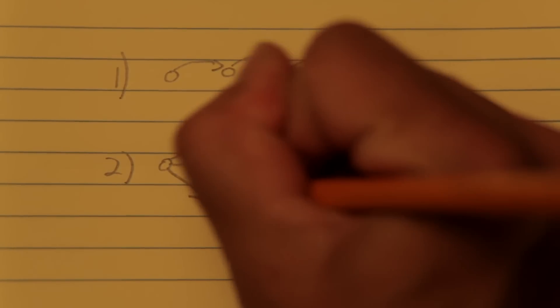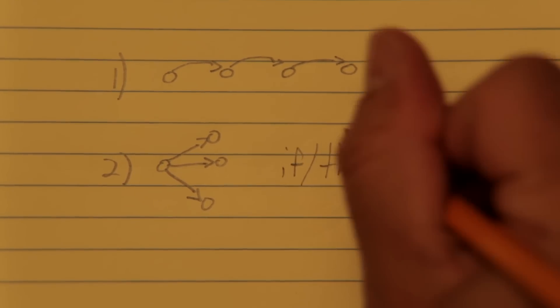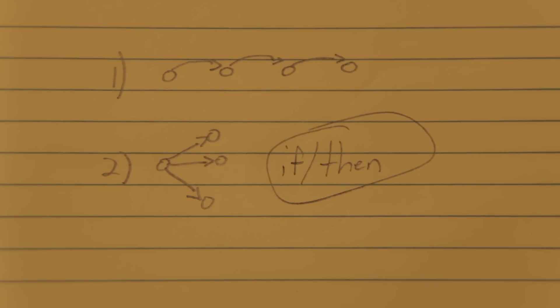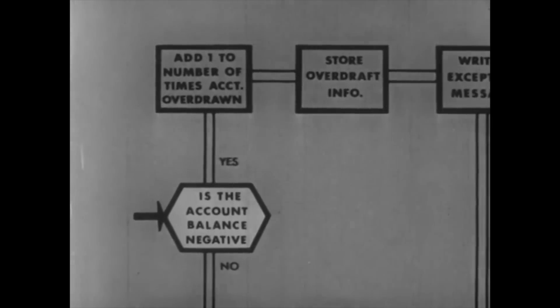And in terms of deciding, the machine also needed to be able to recognize commands of the form, if something, then something, known as a conditional statement. So that based on any given calculation, the next operation can take different paths, or branches.